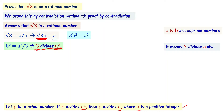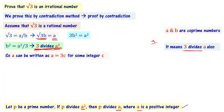So 3 divides a and 3 divides a squared. Since 3 divides a, we can write a divided by 3 equals some integer c, or equivalently a equals 3c for some integer c.